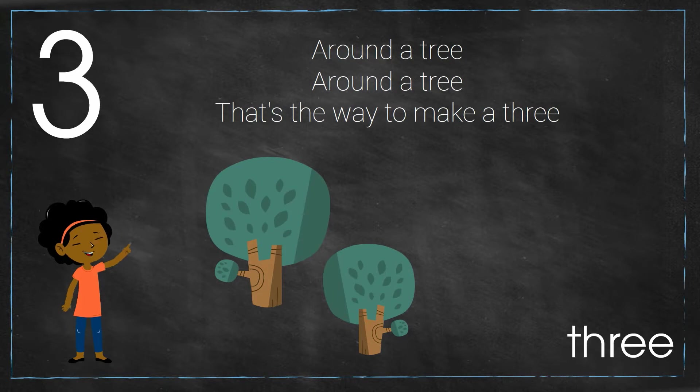Three. How do we write the number three? Around the tree, around the tree, that's the way to make a three.